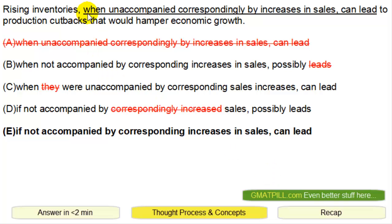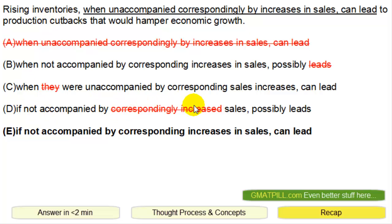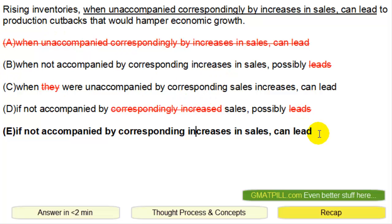Looking at the answer choices: A has 'unaccompanied correspondingly' with the '-ly' here, which is really weird — that's why A is no good. B had the issue with 'leads.' C uses 'they' — 'rising inventories when they' — you don't need to repeat a reference to rising inventories. D has 'if not accompanied by correspondingly increased sales, possibly leads' — 'leads' is also the issue. E says 'rising inventories if not accompanied by corresponding increases in sales' — phrased correctly, so A, B, C, and D are wrong; E is the only correct answer.